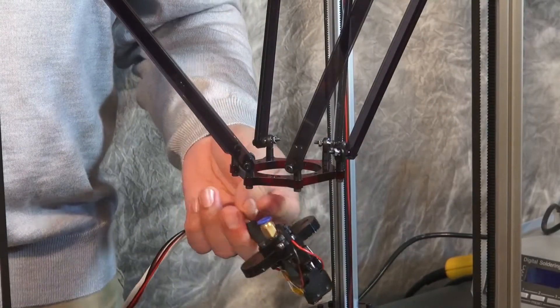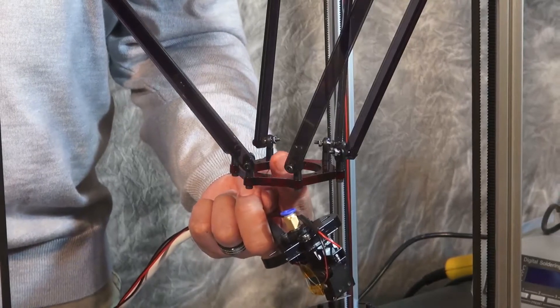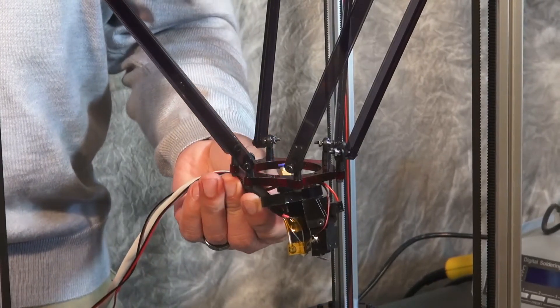Now we're going to run the wires up through the center of our print arms to mount the hot end to the bottom here.